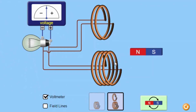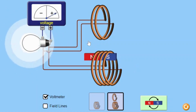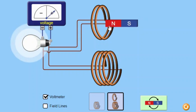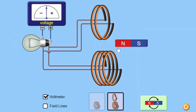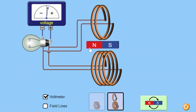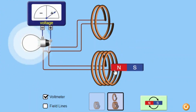The simulation visually represents the induced EMF through the brightness of the bulb. This visual representation helps students understand the relationship between the rate of change of magnetic flux and the induced EMF. When the magnetic flux changes rapidly, the induced EMF is higher.